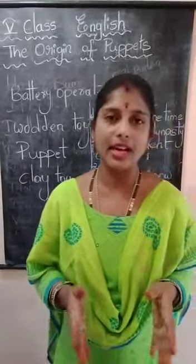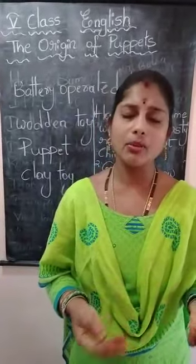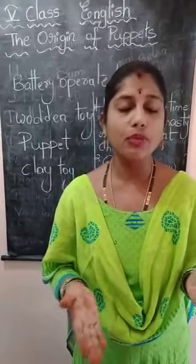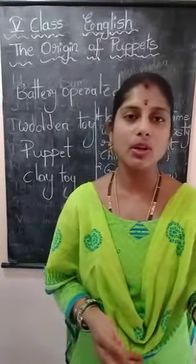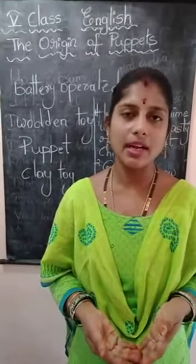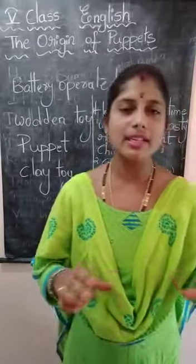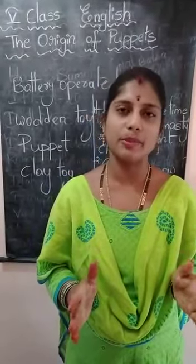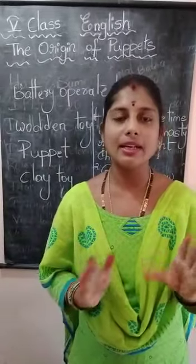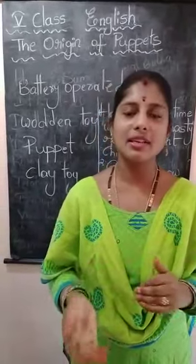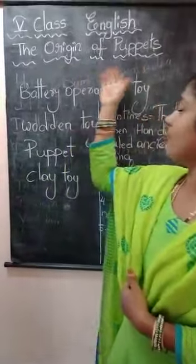The emperor smiled and nodded. 'I thank you for guiding me with such wise words.' The priest had guided the emperor out of his sorrows. This is the brief explanation of the lesson — how the priest made a puppet of cloth resembling the empress, narrated the emperor and empress's story, and helped the emperor find joy. This is the origin of puppets.